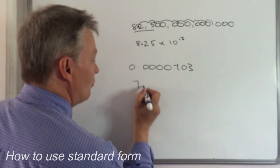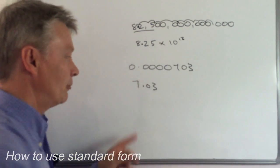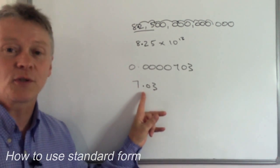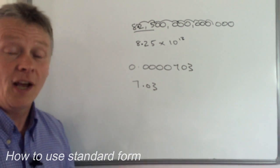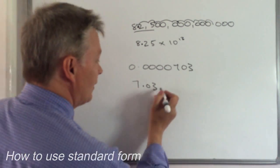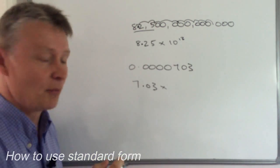And I'm going to put my decimal point in the middle because then that becomes a number between 1 and 10. So 7.03. And then I'm just going to tell the reader how far I've moved the decimal point.